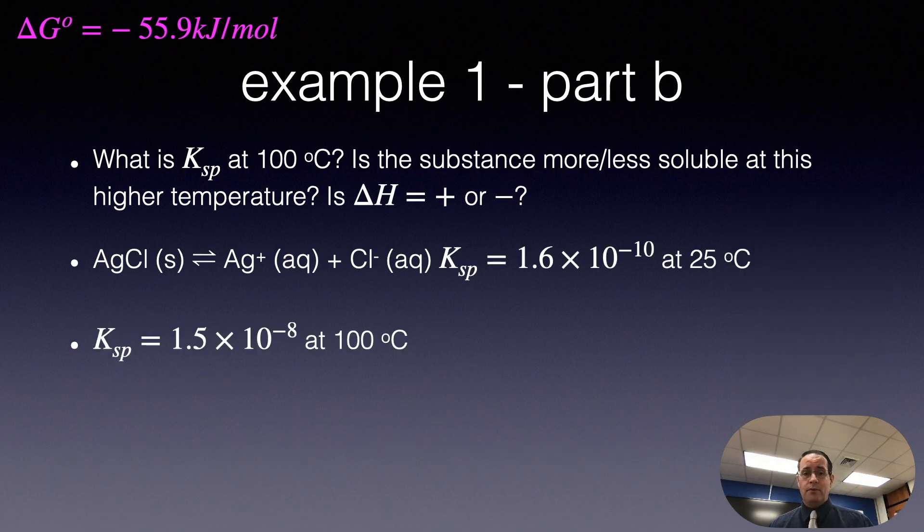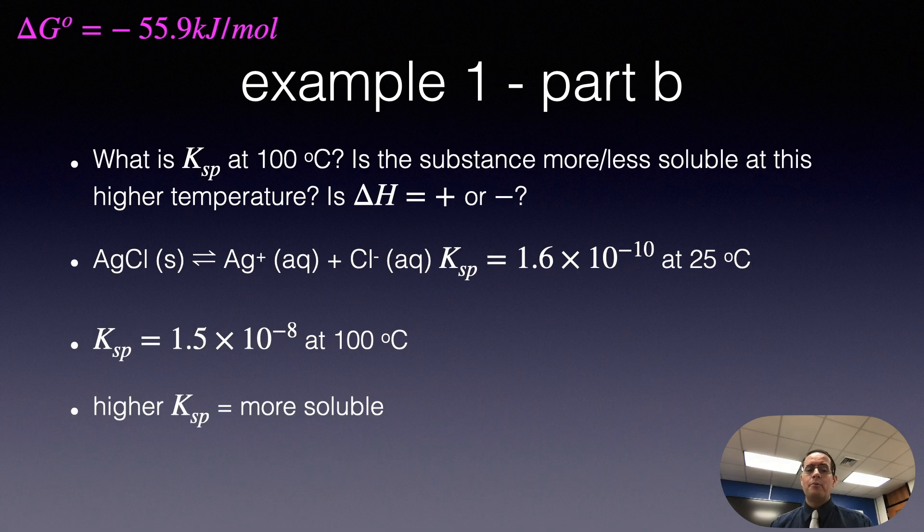Now we have this information. How do we answer this question? So we have the Ksp is 1.5 times 10 to the minus 8 at boiling water temperature. And in the table, it was 1.6 times 10 to the minus 10 at room temperature, 25°C. So we want to know, is this substance more or less soluble at this higher temperature? Well, remember that if you have a higher K, it means products are more favored, which means it's more soluble. So at 100°C, this substance is more soluble than at 25°C because the equilibrium constant is greater.